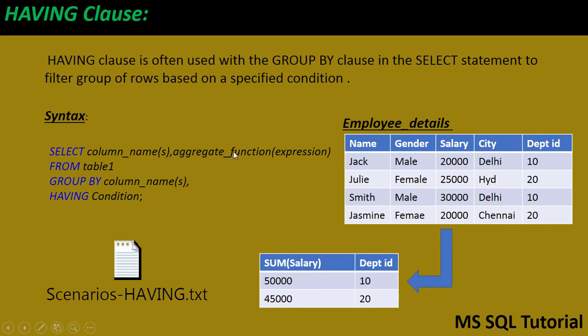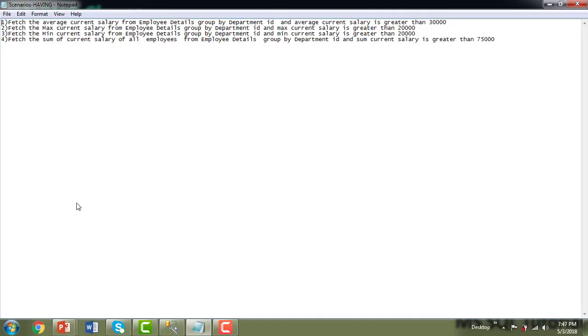The syntax is: SELECT column names, aggregate function FROM table GROUP BY column names HAVING condition. If you are not using GROUP BY, you cannot use the HAVING clause.